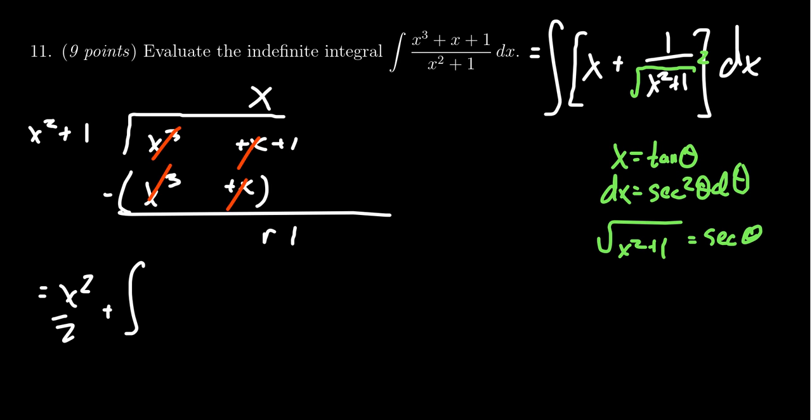So the antiderivative of x is going to be x squared over 2. And then you have to integrate. The dx becomes a secant squared theta d theta. Since the square root of x squared plus 1 equals secant, the bottom would then become a secant squared theta. In which case, those cancel out. You have this x squared over 2 plus the integral of d theta.